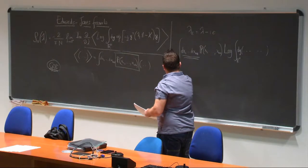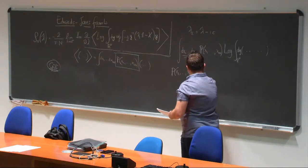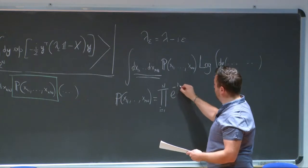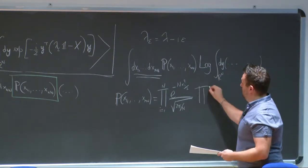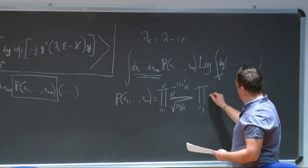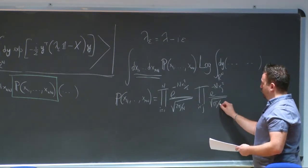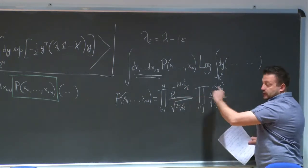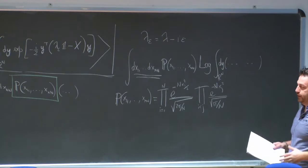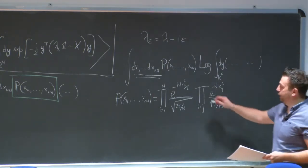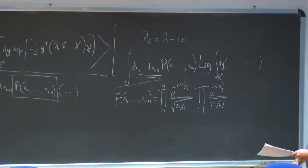For the GOE, the joint PDF of the entries is just a product of Gaussian variables with different variances for the diagonal and off-diagonal terms. I hope you all recall why we need different variances on the diagonal and off-diagonal terms. I rescaled the variances of the diagonal and off-diagonal elements with N in order to ensure a good large-N limit. We don't want the edges of the semicircle to grow with N.